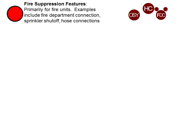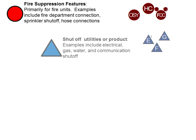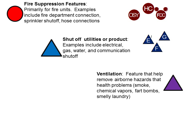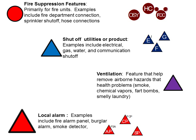Fire suppression features are features that essentially have water going into, through, or coming out of them, and are used for fire suppression. Feature shutoff devices are valves that help shut off products such as gas or electricity. Ventilation features help remove airborne hazards from a building or other structure. And alarms are features that include fire and burglar alarms.